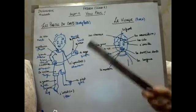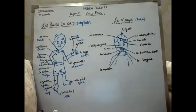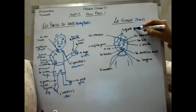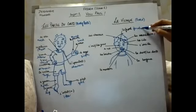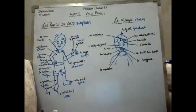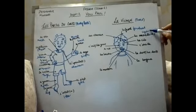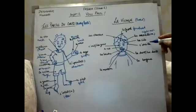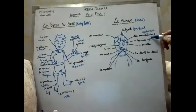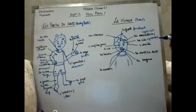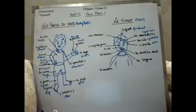Le front means forehead. Les sourcils means eyebrows — and they are masculine, that is why I have written M here. Les cils means eyelashes. Oreilles means ear.